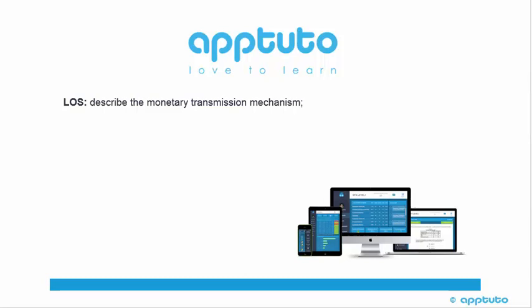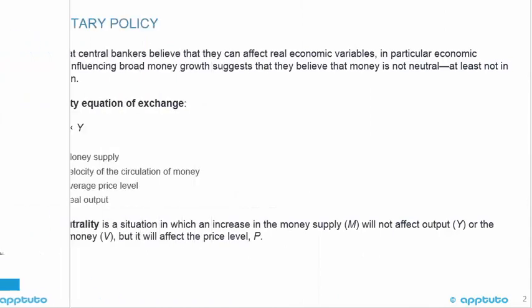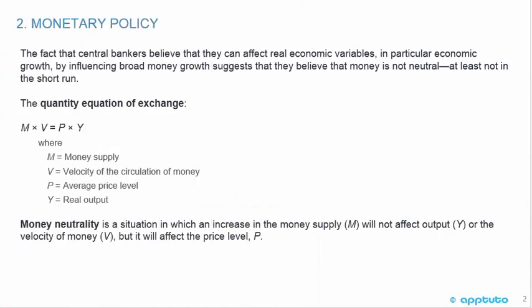This LOS describes the monetary transmission mechanism. The fact that central bankers believe that they can affect real economic variables, in particular economic growth, by influencing broad money growth suggests that they believe that money is not neutral, at least not in the short run.